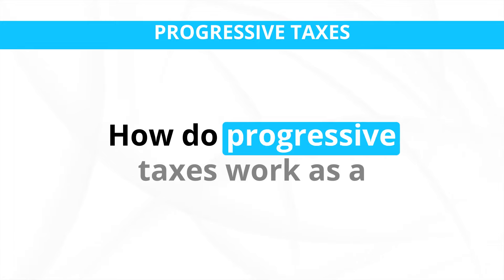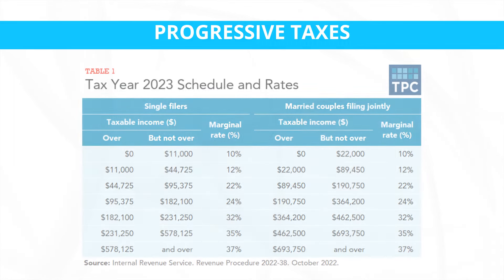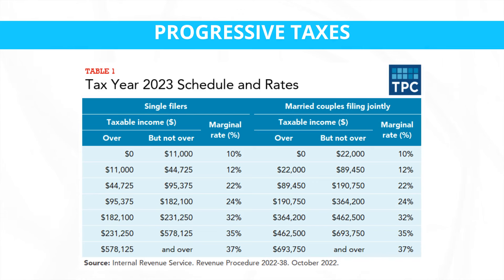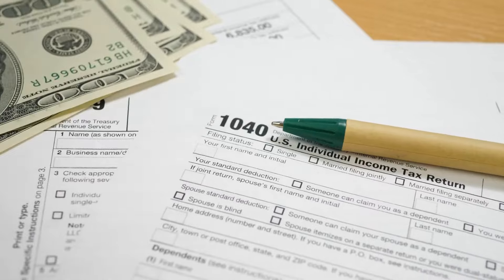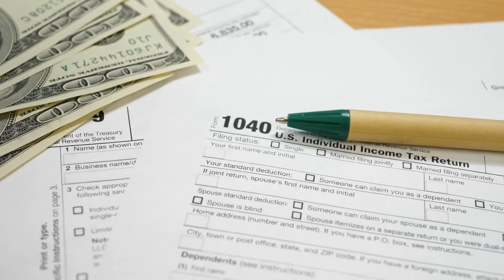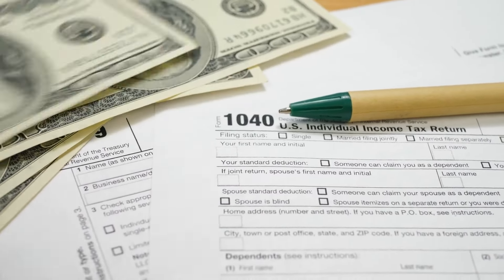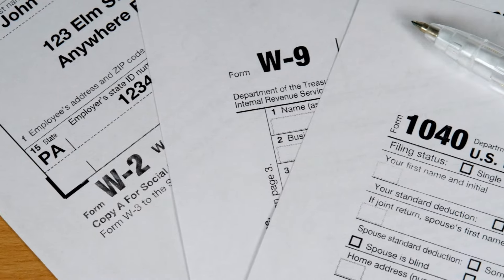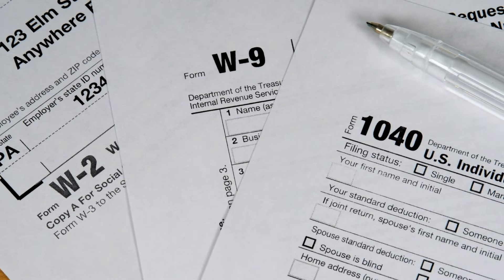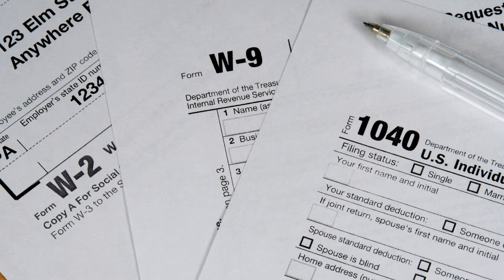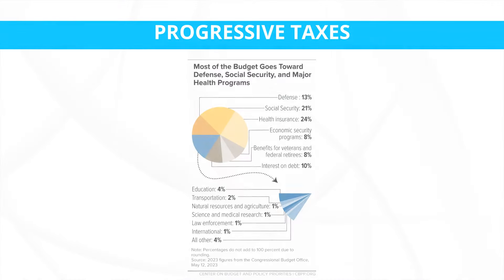Step 1 — Taxation structure: Governments design tax brackets based on income levels. The tax rates are set such that individuals with higher incomes fall into higher tax brackets and are subject to higher tax rates. Step 2 — Tax collection: Individuals and businesses report their income, and tax authorities assess their tax liability based on the progressive tax structure. Compliance is enforced through tax laws and regulations.